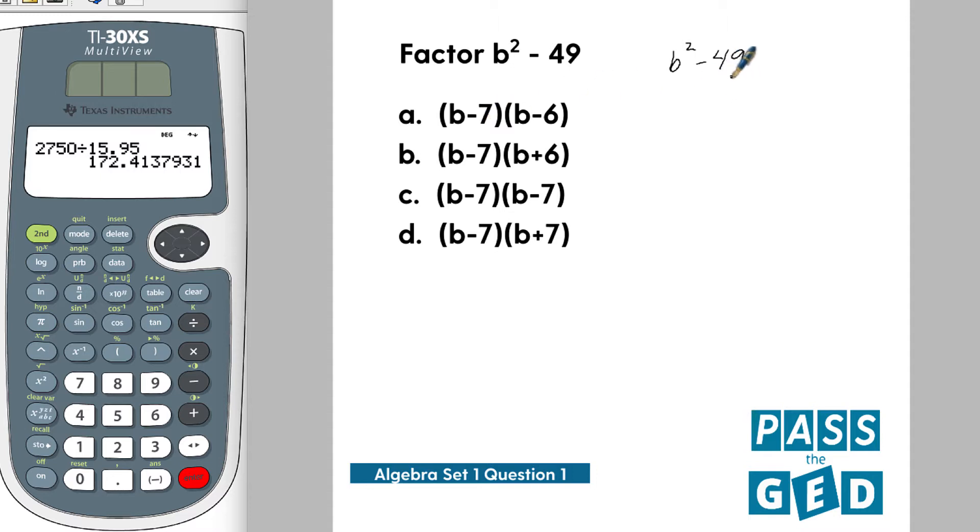So what we want to do is figure out how do we get 49. If we take 7 times 6 and 7 times 7, well 7 times 6 is 42 and 7 times 7 is 49.